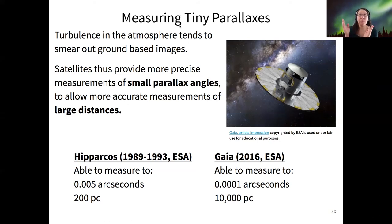And on top of that, turbulence in the atmosphere, which is the reason stars appear to twinkle, tends to smear out images that are collected by ground-based telescopes. So generally, we need space-based telescopes to make the most accurate measurements of parallax angles at high precision.